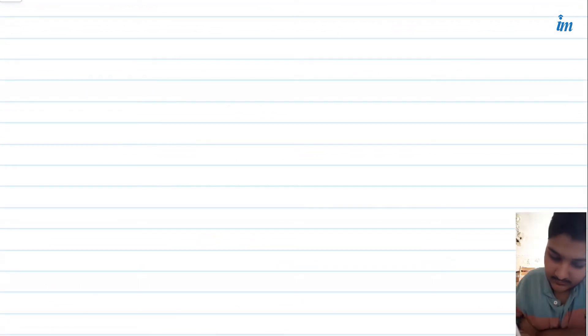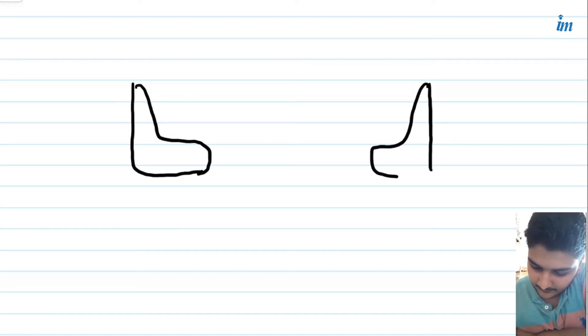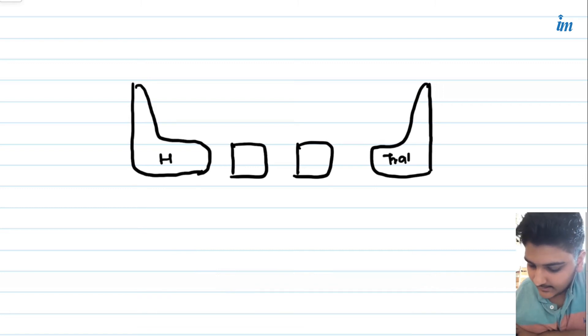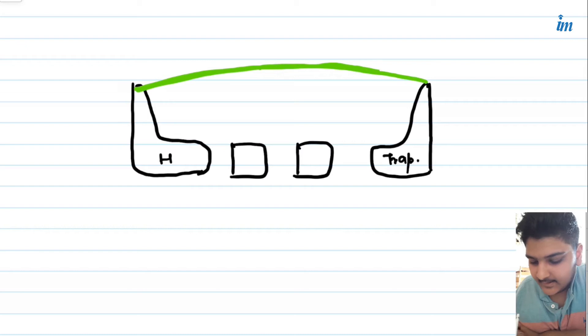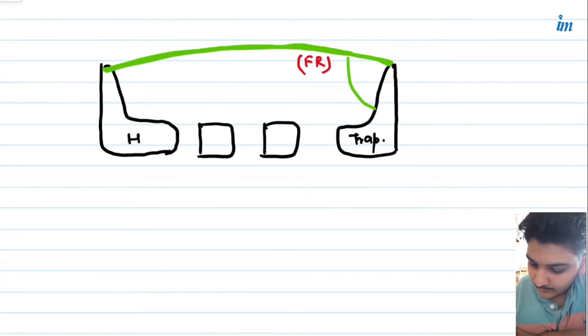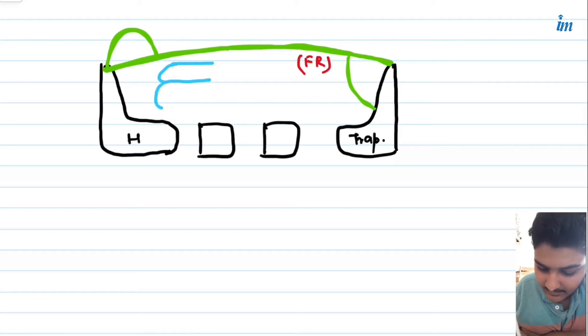To visualize this, suppose here you have the hamate and here you have the trapezium, with the carpal bones in between. The flexor retinaculum bridges these two — from hamate to trapezium. The flexor retinaculum gives a deep slip and a superficial slip. Now let's look at the deep structures. The first structure is the ulnar bursa.